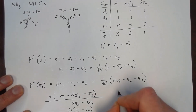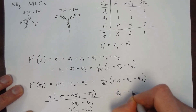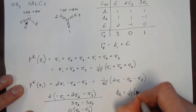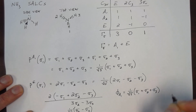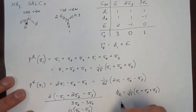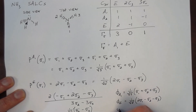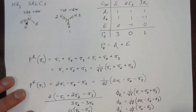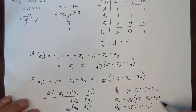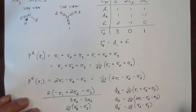So there are three symmetry adapted linear combinations in total: one for the A1 representation, and two for the E representation. These two linear combinations for the E representation are orthogonal to one another, and they are.